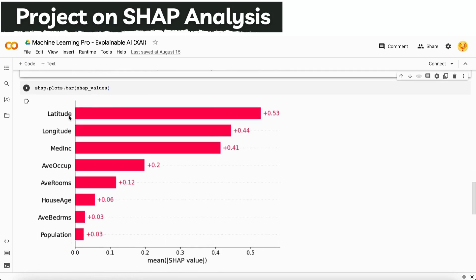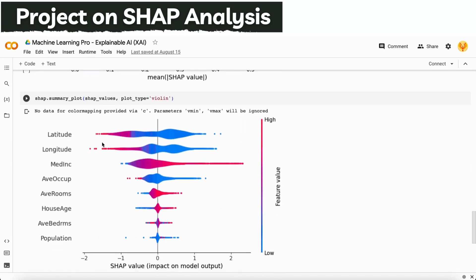This plot shows the mean importance of each variable like latitude, longitude, median income, average occupancy, and average rooms. These five are the most important variables that you can use in your model if you want it to be more explainable as well.